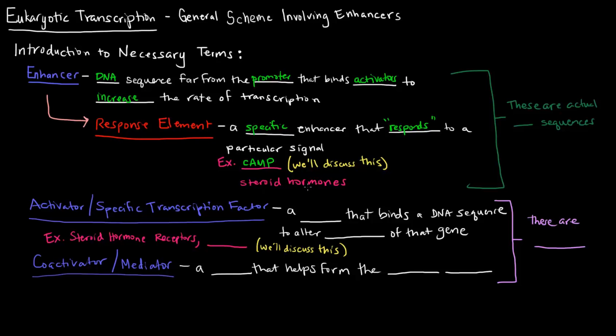But another thing is steroid hormones. Steroid hormones, for example, something like testosterone. Individuals who want to build muscle will sometimes take testosterone as a steroid hormone, and what it does is it acts via an enhancer, a specific response element, to increase transcription. So an increase in transcription, more mRNA. More mRNA means more protein. More protein means more muscle mass. So that's a little fun fact there for you.